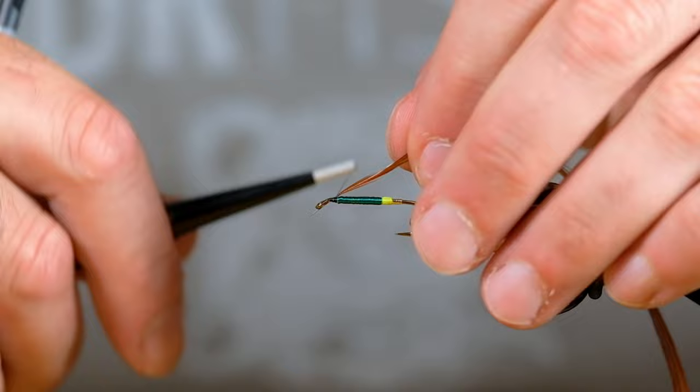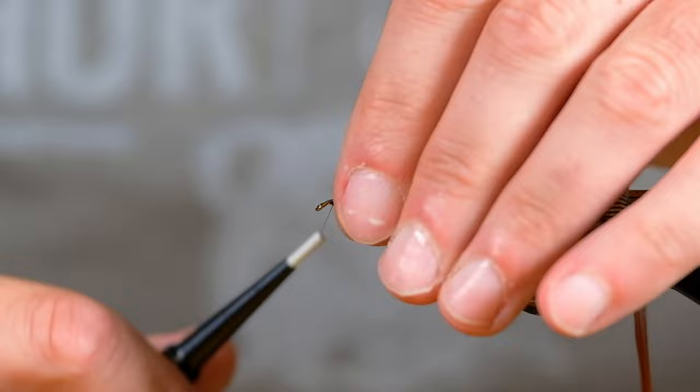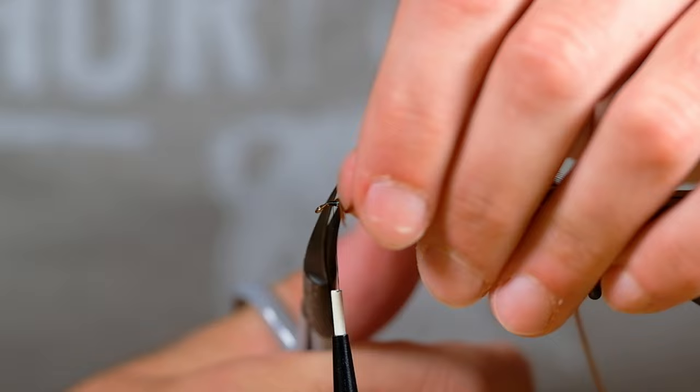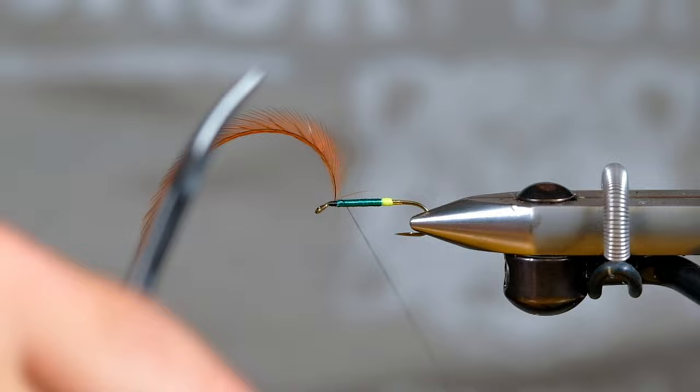Like the thicker part near the bottom. And basically that just kind of helps with our palmering going down through the body here. So I just folded over that stem and tied it in, and that just secures it a little bit extra.